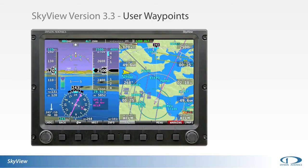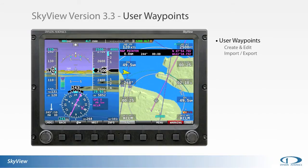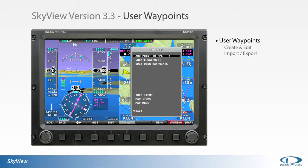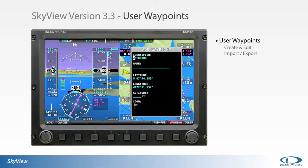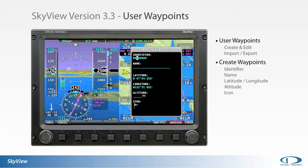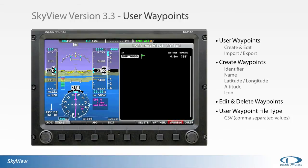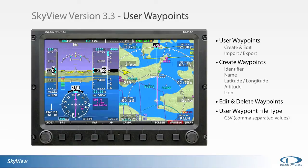The new user waypoint interface in version 3.3 greatly expands the pilot's ability to create, edit, import, and export custom waypoints. Pilots can create waypoints by latitude, longitude, and altitude. A short identifier can be added, as well as a long name and a narrative text that appears in the remarks section of the waypoint's info page. The SkyView also allows selection of a customized icon for display on the moving map. User waypoints can also be exported or imported in comma-separated value (CSV) file format.